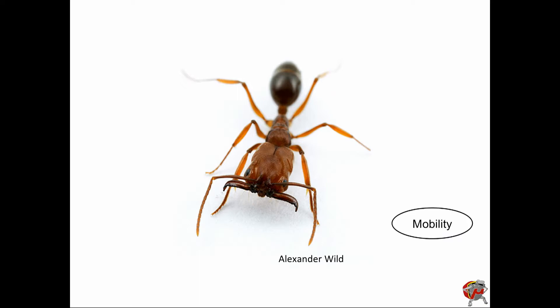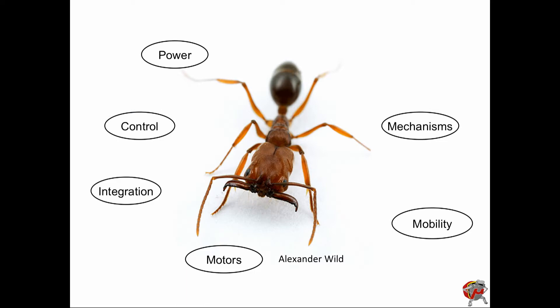So one is mobility. I'm really small, everything else around me is big. How do I get through that? I also need mechanisms and motors in order to support that mobility, and I need them to be robust and efficient in order to get through these things. I need the power, the control, the integration in order to add sensors, communication potentially, in order to be able to locomote and get through these environments.